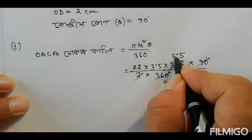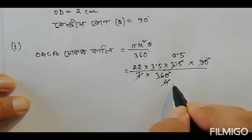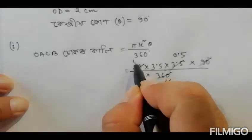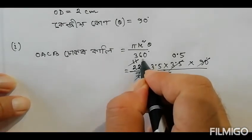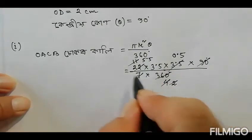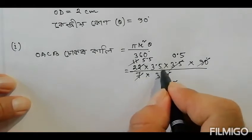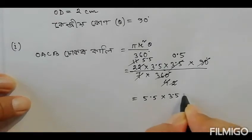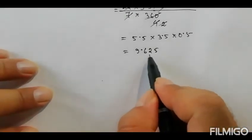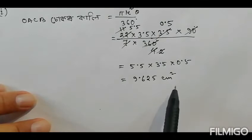After simplifying the calculation, we get the area of sector OACP as 9.625 centimeter square. This is 77 by 8, which equals 9.625 cm².